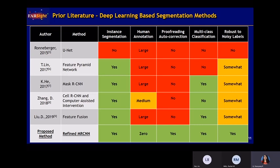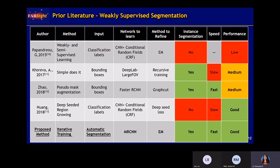With the boost of deep learning, people tend to seek deep learning for help in nuclear segmentation. We have well-known models like U-Net, Feature Pyramid Network, Mask RCNN, and the latest published models. However, the performance of these deep learning methods highly relies on annotation quality. In our case, with zero human effort, models trained on noisy labels do not perform well. Our method outperforms all of them in terms of auto-correction, classification, and robustness to noisy labels.